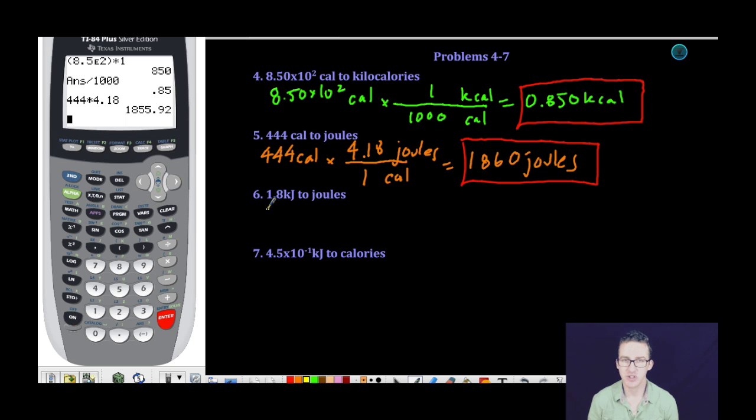As we keep moving here, question number six, 1.8 kilojoules. This time we're going all the way to joules. The first thing we do is convert my kilojoules to joules. To do that, I have to simply recognize that there are 1,000 joules in every one kilojoule.